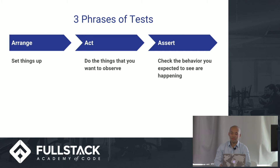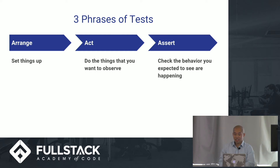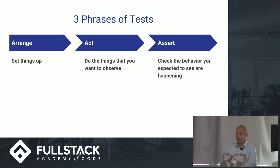Within testing, there are always three phases: arrange, act, and assert. Arrange means setting up the environment. Act is performing the thing you want to observe — the behavior you want to test. And assert is checking that the expected behavior is indeed happening.